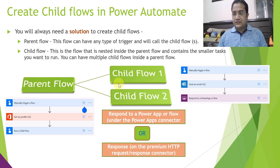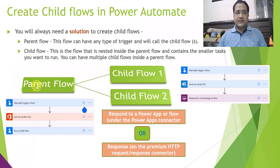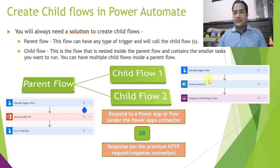You can have multiple child flows inside a parent flow — there is no restriction that you can only create one or two. In the diagram you can see there is a parent flow, and here I am calling one child flow using the 'Run a child flow' action. This is the parent flow and this is the child flow I will be showcasing today.